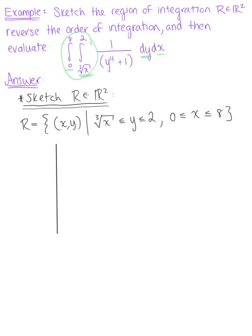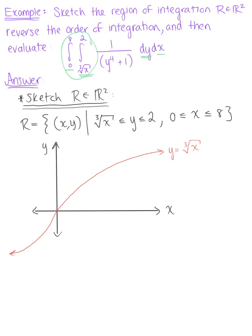On our y-axis and x-axis, our first curve is the cubic root of x, which in quadrant 1 looks like a square root, but keep in mind it also extends down into quadrant 3. This is y equals the third root of x. We also have y equals 2, a horizontal line. Our region of integration is bounded by these two curves. We know this is the shaded region because x ranges from 0 to 8.